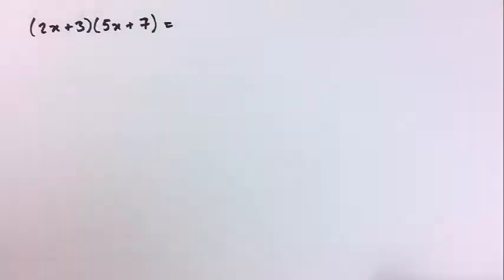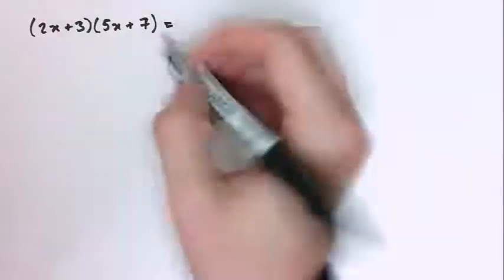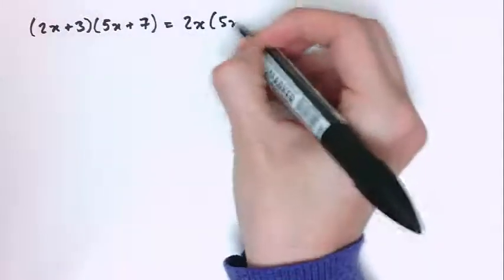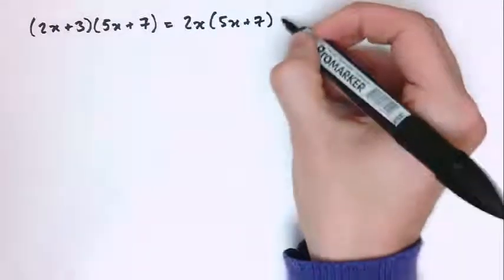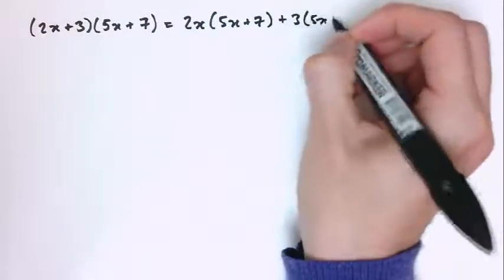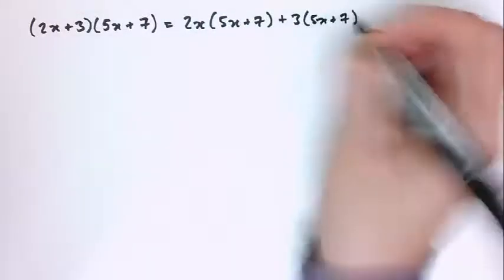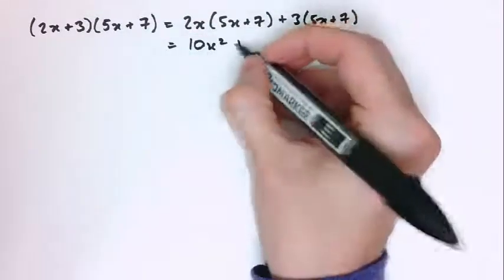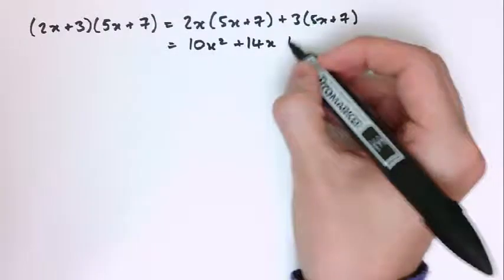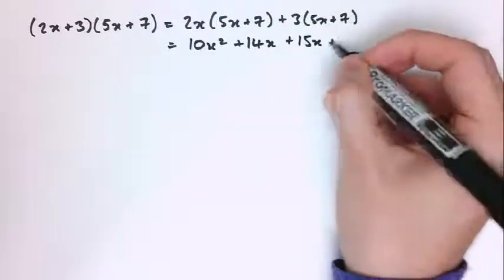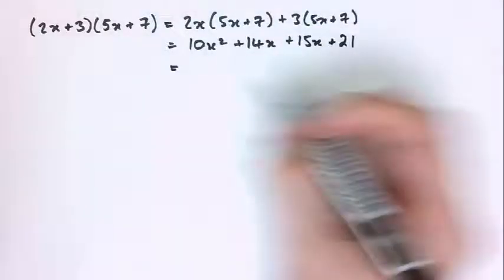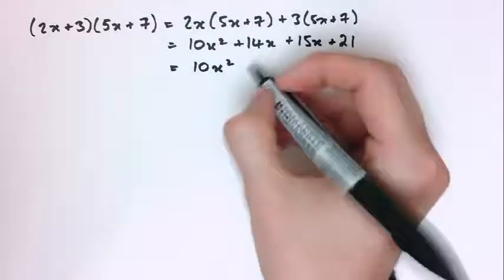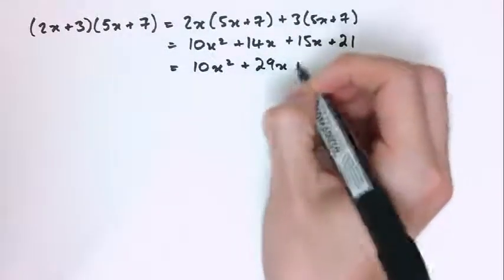Now let's look at some more examples. So (2x + 3) times (5x + 7) is the same as 2x times (5x + 7) plus 3 times (5x + 7). Multiplying these out we get 10x squared plus 14x plus 15x plus 21. Collecting the like terms gives 10x squared plus 29x plus 21.